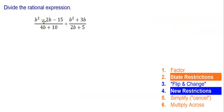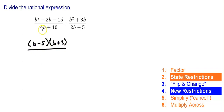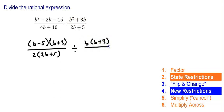Let's look at another one. Here again I have two rational expressions being divided. First step is factor everything. So I have b squared minus 2b minus 15 — a trinomial — which factors to b minus 5 times b plus 3. Divided by 4b plus 10, which has a GCF of 2, giving 2 times quantity 2b plus 5. Then divided by b squared plus 3b, which has a GCF of b giving b times quantity b plus 3. And 2b plus 5 can't be factored further.